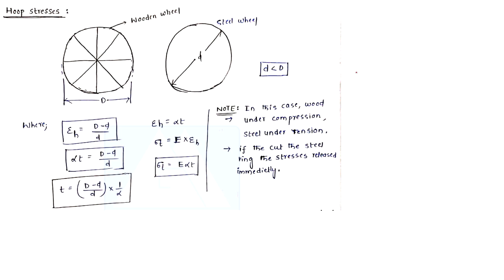Generally we use a single dimension — delta L by L — but the rod will be straight. For a wheel or circle, we use D minus d by D. Capital D is the outer diameter, small d is the internal diameter.